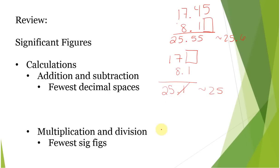If you're talking about multiplication and division, you want to use the fewest sig figs, not decimal spaces, sig figs. So here, if we had 17 times 8.1, your calculator is going to give you 137.7. There's two sig figs here, two sig figs here. So your answer should only have two. This is about 140.